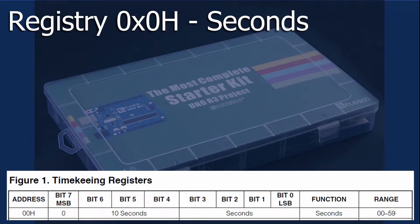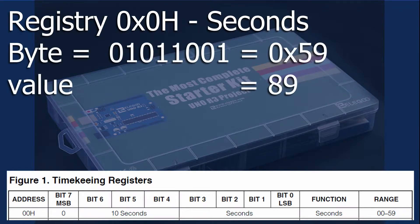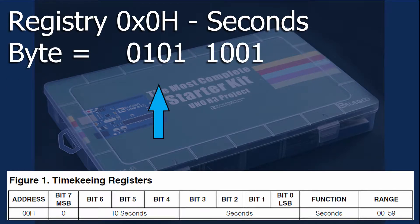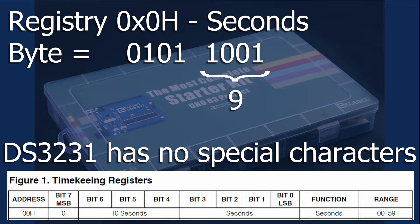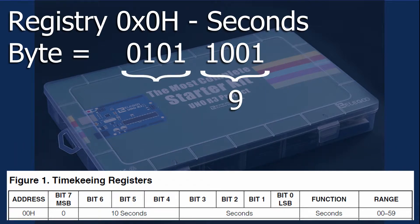As an example, if we were reading register zero on the DS3231 RTC chip, the second byte might look like this: 0, 1, 0, 1, 1, 0, 0, 1. The first nibble or the first four least significant bits would equate to nine, which in the DS3231 is the highest value for a single digit — in other words, there are no special characters. The next nibble or the last four bits would equate to five, so now we know that we're reading 59 seconds.